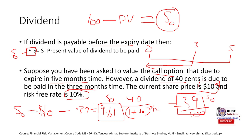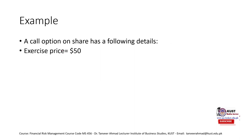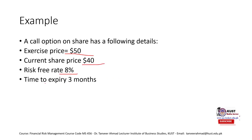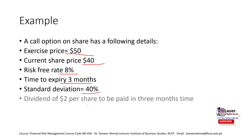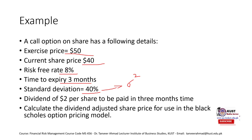Here is one more example to look into yourself: exercise price is 50, current spot price is 40, risk-free rate is 8 percent, time to expiration is three months, standard deviation is 40 percent (convert to sigma squared). Dividend per share is 2 dollars, to be paid in three months — which is at or before expiration — so calculate the dividend-adjusted share price. Find the present value of the 2-dollar dividend: 2 divided by (1 + 0.08) raised to the power of 3/12, deduct it from the current share price to get the S-naught to use in the Black-Scholes model. This concludes our discussion on option pricing models.